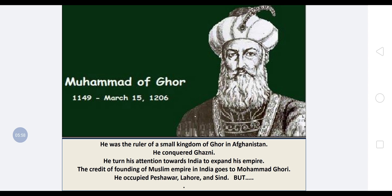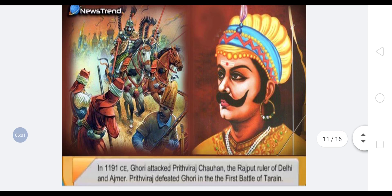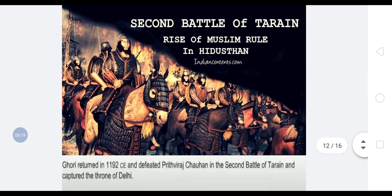In 1191 CE, Ghori attacked Prithviraj Chauhan, the Rajput ruler of Delhi and Ajmer. Prithviraj defeated Ghori in the First Battle of Tarain. Then Ghori returned in 1192 CE and defeated Prithviraj Chauhan in the Second Battle of Tarain, capturing the throne of Delhi and Ajmer.